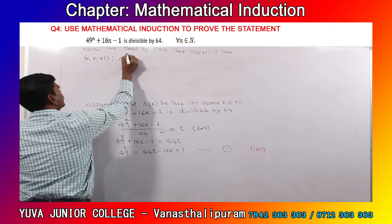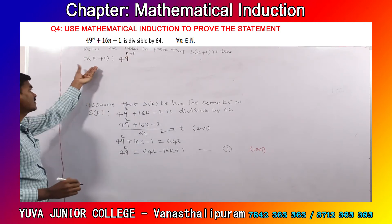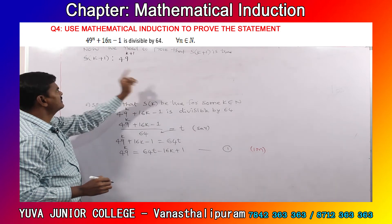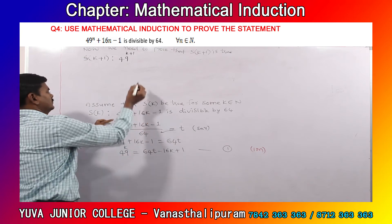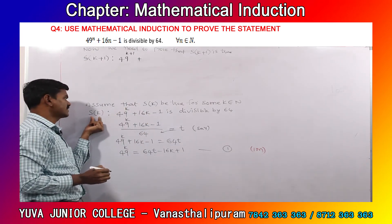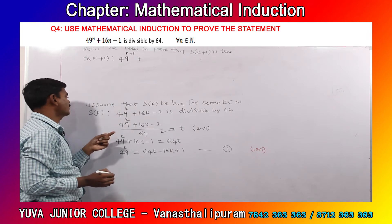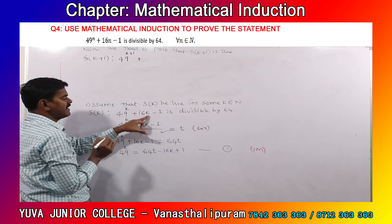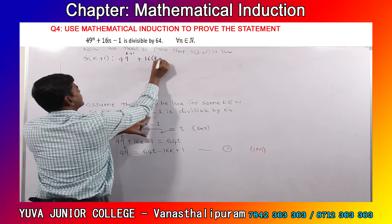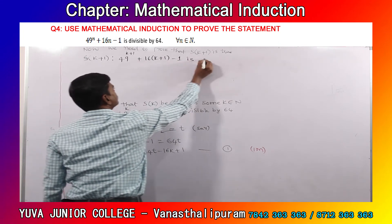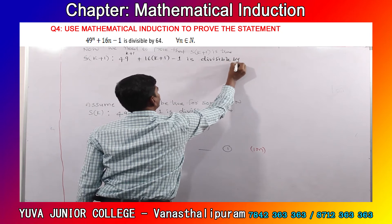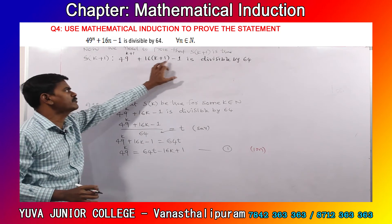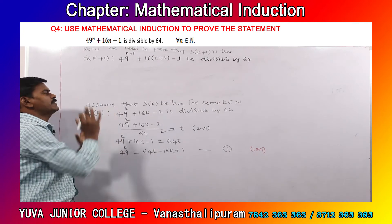S of k plus 1 is: 49 power (k plus 1) plus 16(k plus 1) minus 1 is divisible by 64. You can see either S of n or S of k — replace n with k plus 1 or replace k with k plus 1. By replacing k with k plus 1: 49 power (k plus 1) plus 16(k plus 1) minus 1 is divisible by 64. This is our target. If you are able to prove this, the S of k plus 1 stage will be finished.